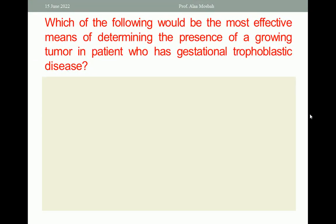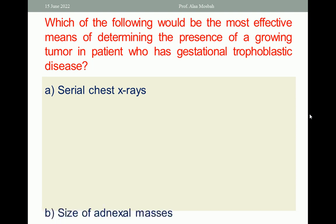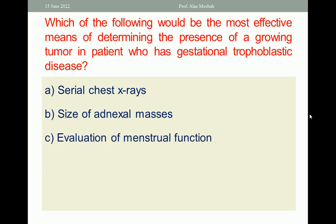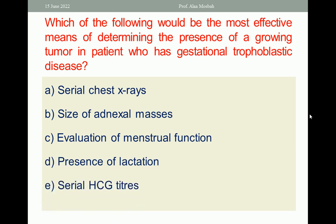Which of the following would be the most effective means of determining the presence of a growing tumor in a patient who has gestational trophoblastic disease? A. Serial chest X-rays; B. Size of adnexal masses; C. Evaluation of menstrual function; D. Presence of lactation; E. Serial HCG titers. The one best response here is E — serial HCG titers.